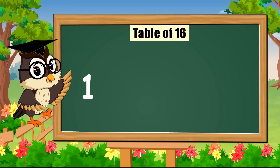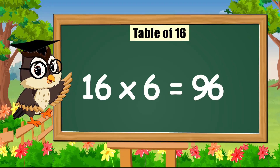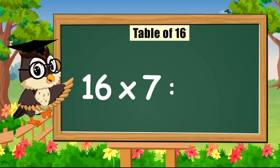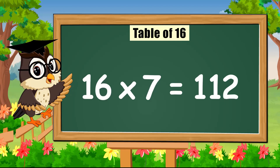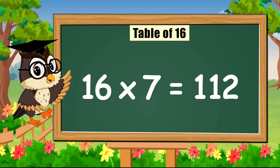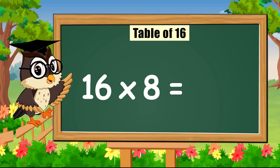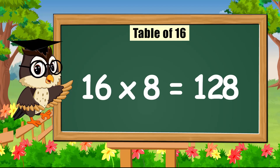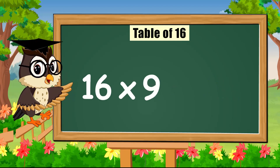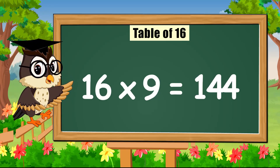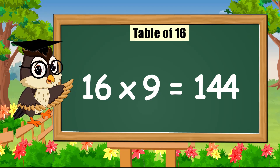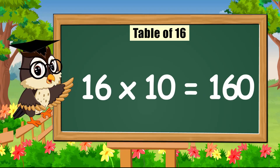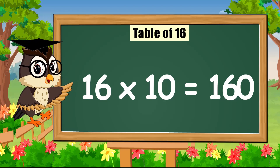Sixteen times six is ninety-six. Sixteen times seven is a hundred and twelve. Sixteen times eight is a hundred and twenty-eight. Sixteen times nine is a hundred and forty-four. Sixteen times ten is a hundred and sixty.